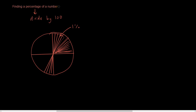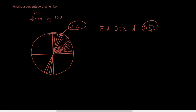So when we find a percentage of a number, for example, let's say the question is: find thirty percent of fifty dollars. The first thing is we try to find one percent. And how do we find one percent? We divide it by a hundred. So we get the number that we want to find the percentage of — fifty dollars — and the first thing is we divide it by a hundred. This action here, dividing it by a hundred, gives us one percent of fifty.